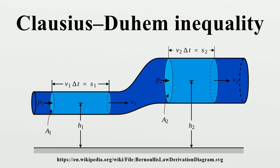This inequality is a statement concerning the irreversibility of natural processes, especially when energy dissipation is involved. It was named after the German physicist Rudolf Clausius and French physicist Pierre Duhem.